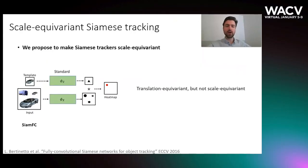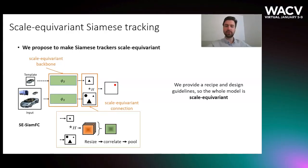We now briefly discuss how we build a scale equivariant extension of a popular Siamese tracker. Siamese produces a heatmap of possible locations by cross-correlating features of a template and a frame. Siamese is translation-equivariant, but not scale equivariant. To build a scale equivariant model, we follow a simple recipe provided in our paper. In short, we equip a tracker with a scale equivariant backbone and connection. We show that the model constructed this way satisfies equivariance properties, and the whole tracker is scale equivariant. We also show that such a recipe is generic and applicable to a wide range of Siamese trackers.